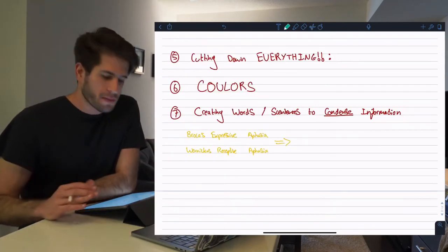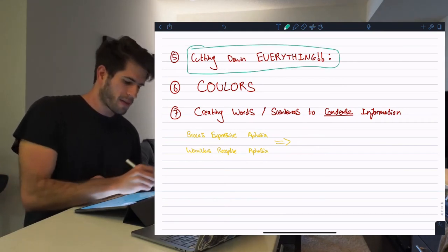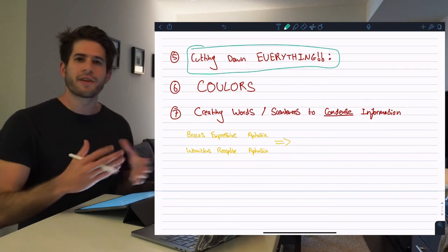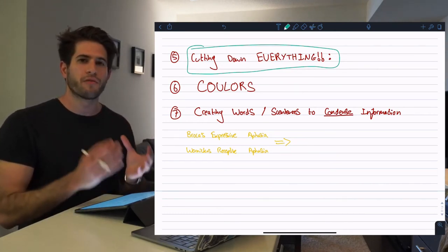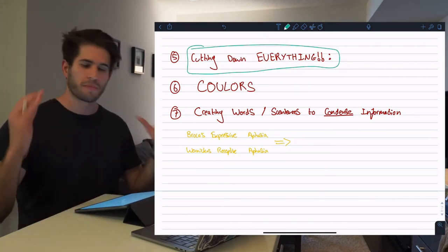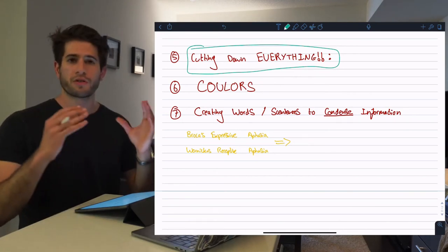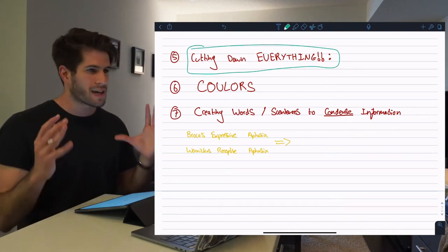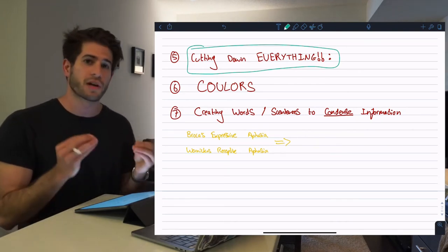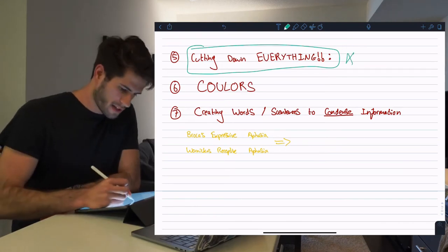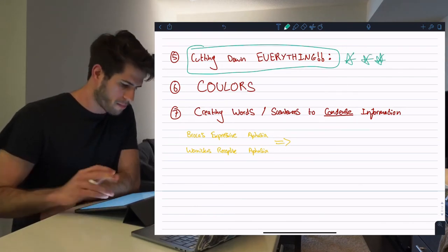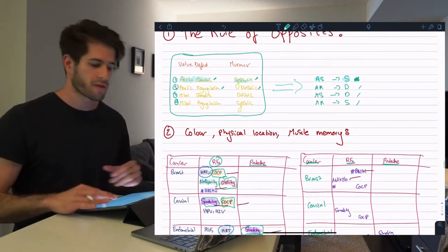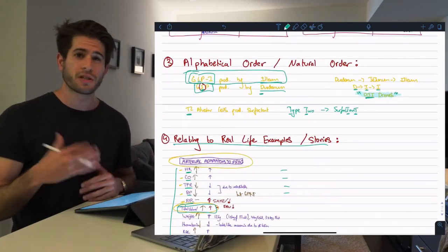Moving on to the last three tips. Number five is just cutting down everything, and this is something I've touched on before. You want to convert whatever you're memorizing into the most simple, basic form possible. Turn complete sentences into words; turn words into just letters or characters, small diagrams, etc. This is honestly probably the most underrated tip — it is so important. Everything you can convert into acronyms, little diagrams, symbols, or whatever just makes everything so much easier to memorize.